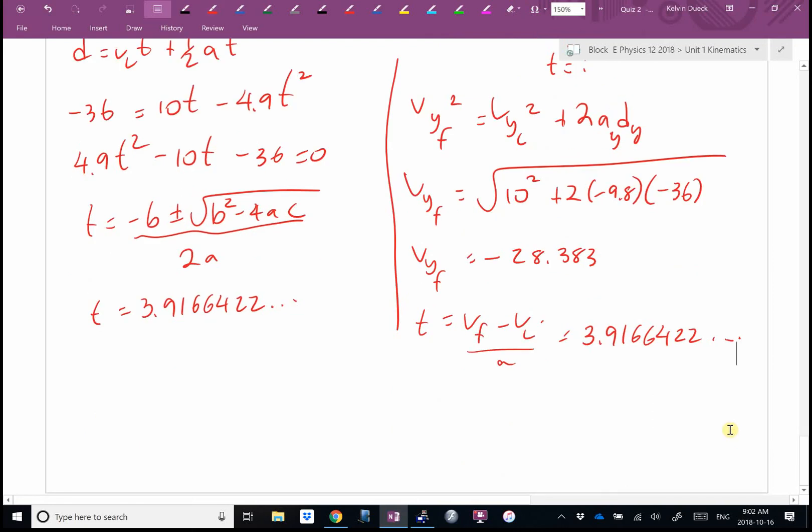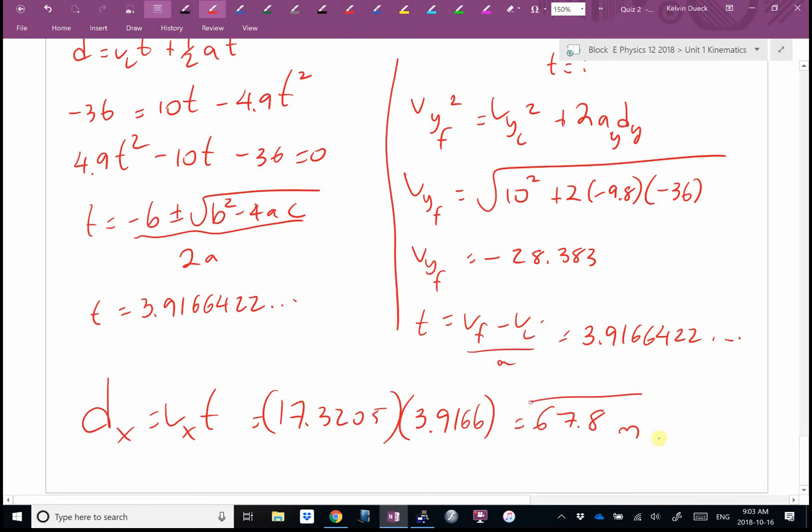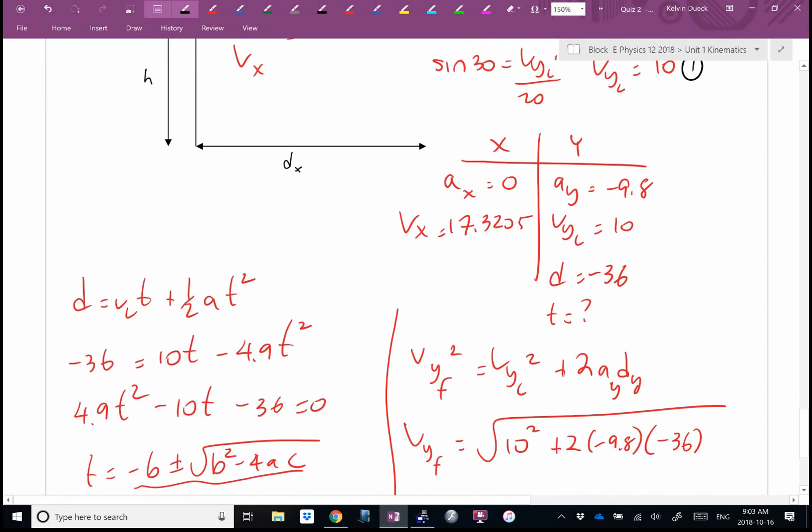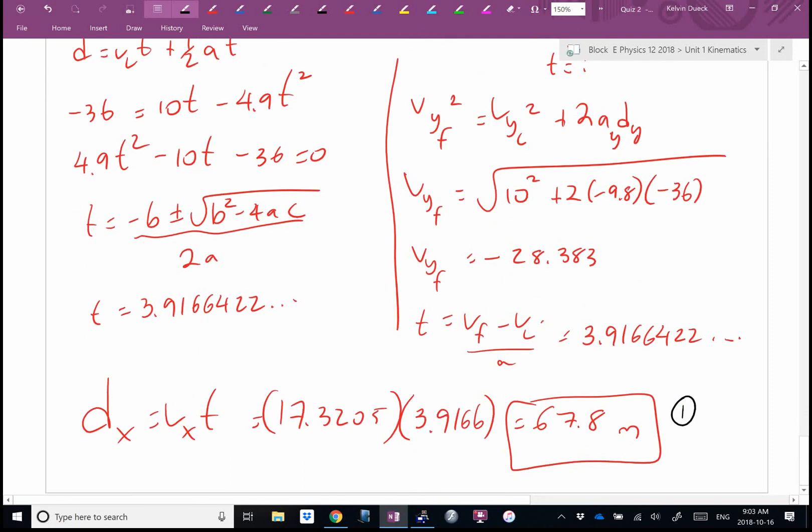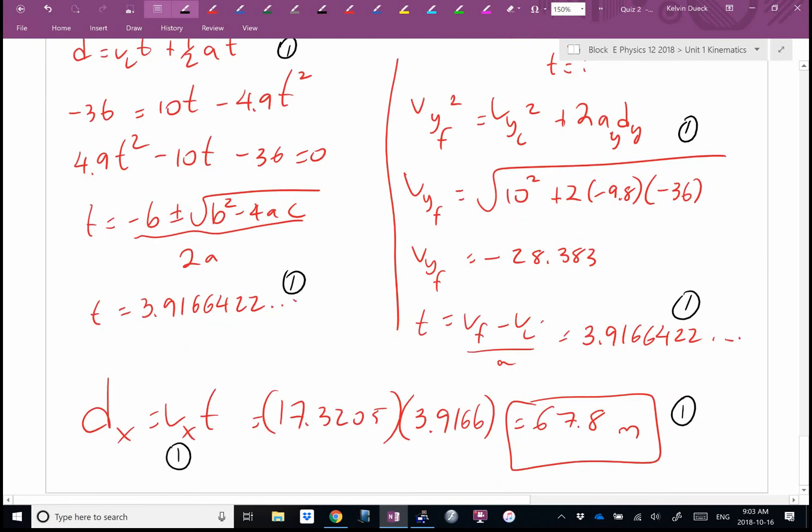What did they want me to find? Vx was 17.3205, time is 3.9166. dx = Vx·t. Do you all get a range of 67.8 meters? If you got that, 7 out of 7. How would I give out part marks? I would give you one mark for that, one mark for that, half mark if I saw that, half mark if I saw that, one mark for the answer. One mark if I saw this, one mark for time and this method. Or one mark for that and one mark for that. But no matter what, you could get 7 marks.